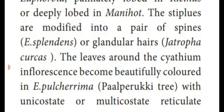In Euphorbia species, the leaves are surrounded by a cyathium inflorescence with beautifully colored bracts — in Euphorbia pulcherrima. It is otherwise known as the palperic tree, which produces a large amount of milky latex. The leaves contain unicostate or multicostate reticulate venation.